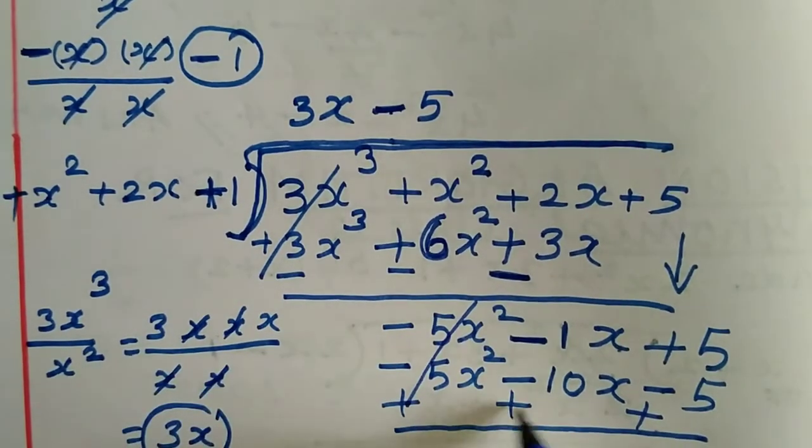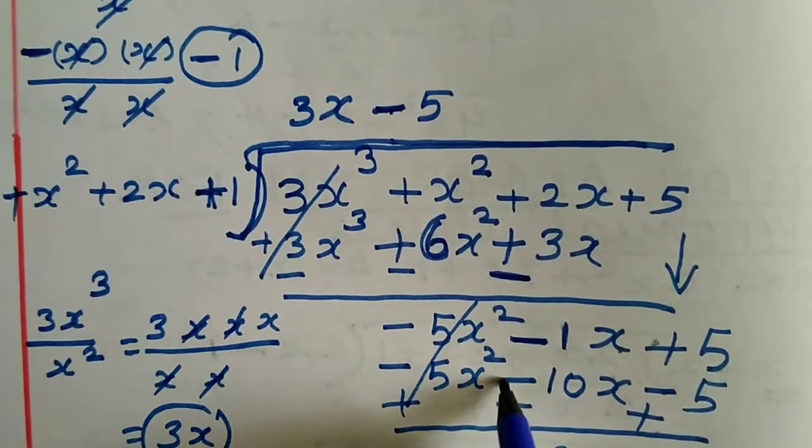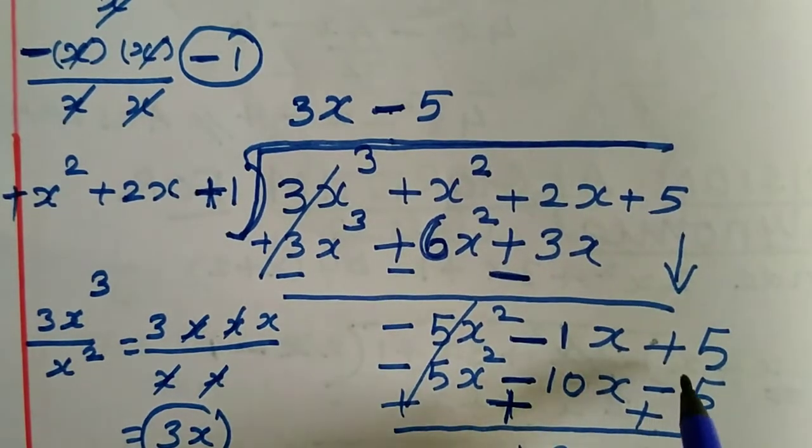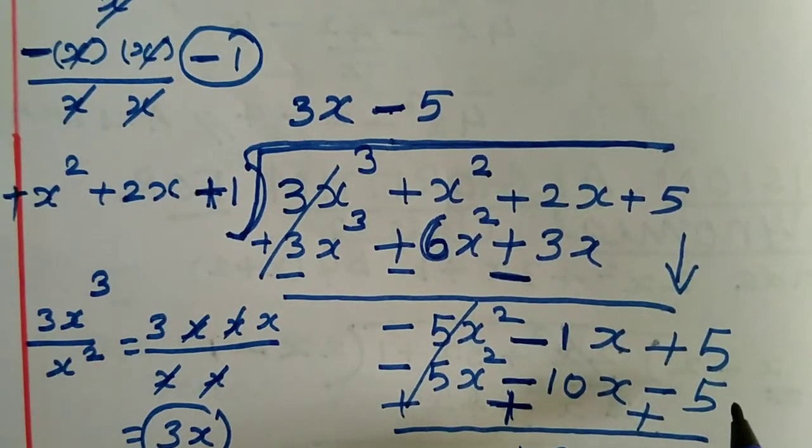-5x² plus 5x² cancel out. -x plus 10x gives +9x. +5 plus +5 gives +10.